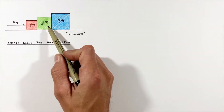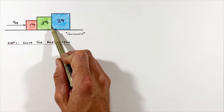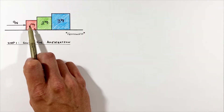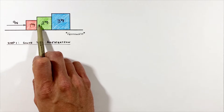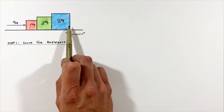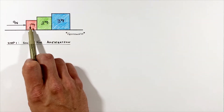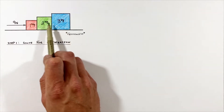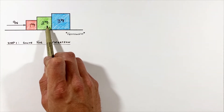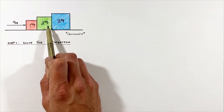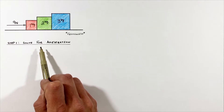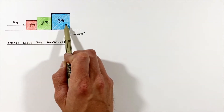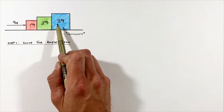To solve for the total acceleration, we need to realize one key concept: this block cannot pass like a ghost through the other two blocks. As this one-kilogram block speeds up, the two blocks in front of it are going to have to speed up at the same rate. So to solve for the acceleration, we look at all three blocks as though they are a single entity.